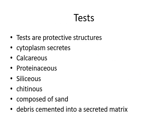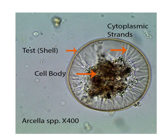Tests are protective structures connected to the cytoplasm. They may be calcareous (calcium carbonate), proteinaceous (proteins), siliceous (silicon dioxide), chitinous (chitin), or composed of sand grains and debris embedded in a secreted matrix. The diagram shows cytoplasmic strands attached to the shell with the cell body inside.